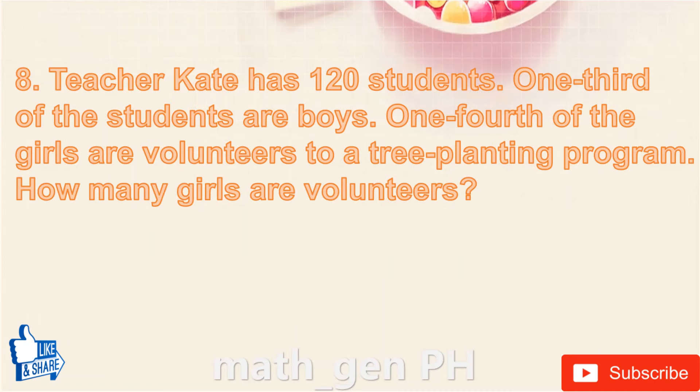Question number 8: Teacher Kate has 120 students. One-third of the students are boys. One-fourth of the girls are volunteers for a tree planting program. How many girls are volunteers?